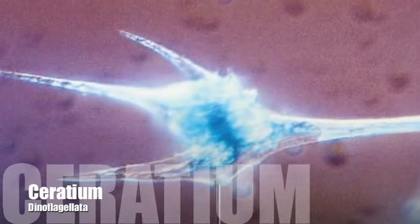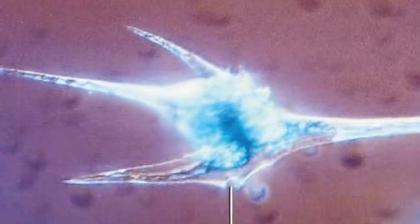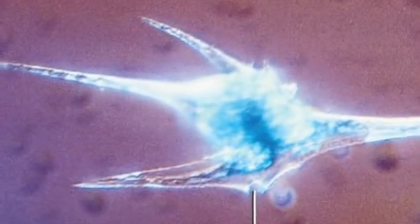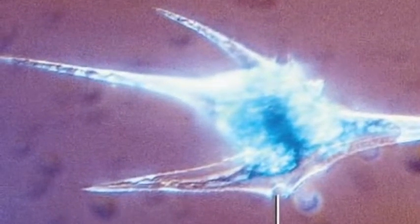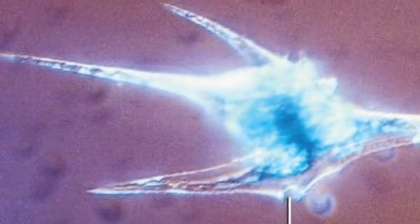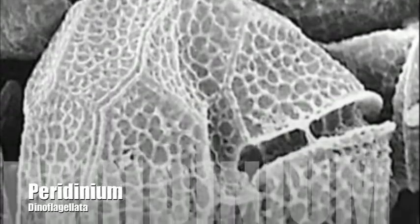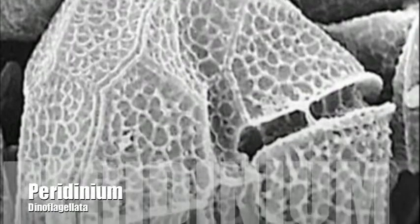Dinoflagellates spin as they move through the water, due to the position of their flagella. On occasion, populations of certain dinoflagellates may increase dramatically, causing the sea to turn red or brown. These are the red tides, which can devastate fish populations, because neurotoxins produced by the dinoflagellates poison fish.